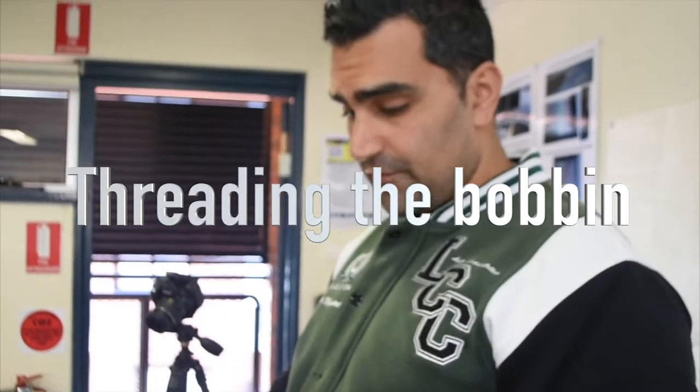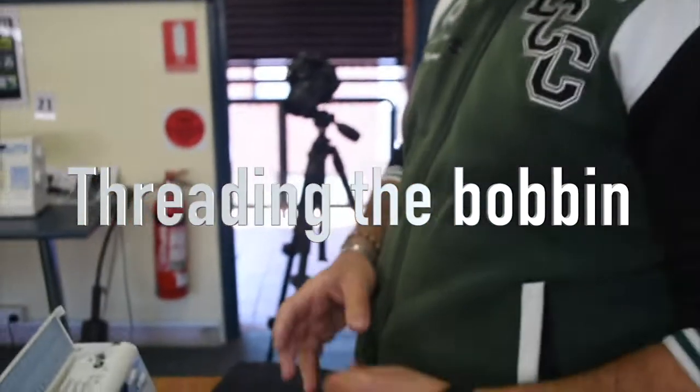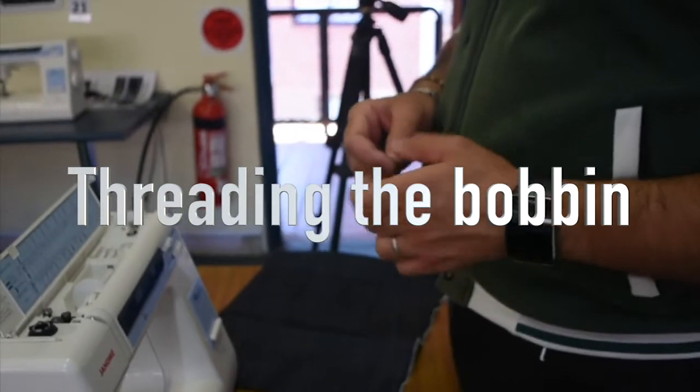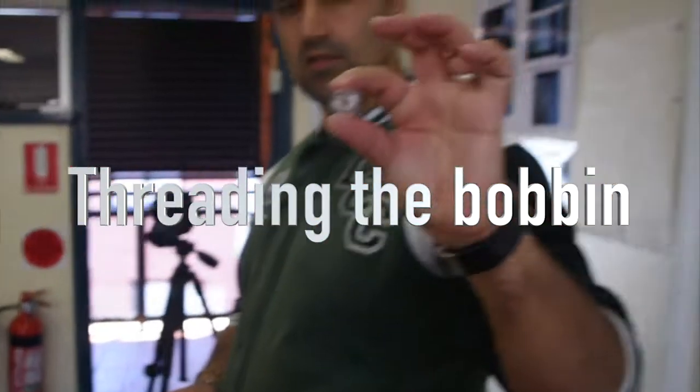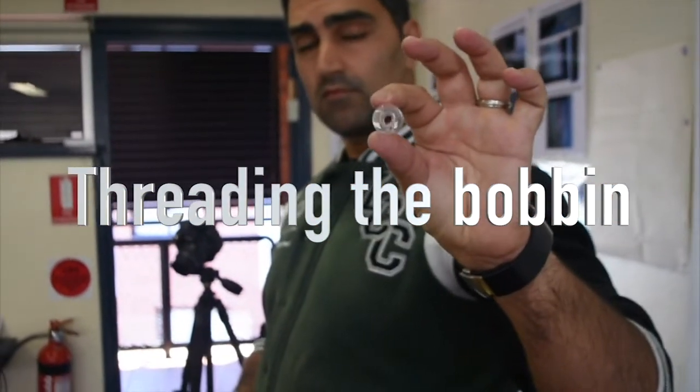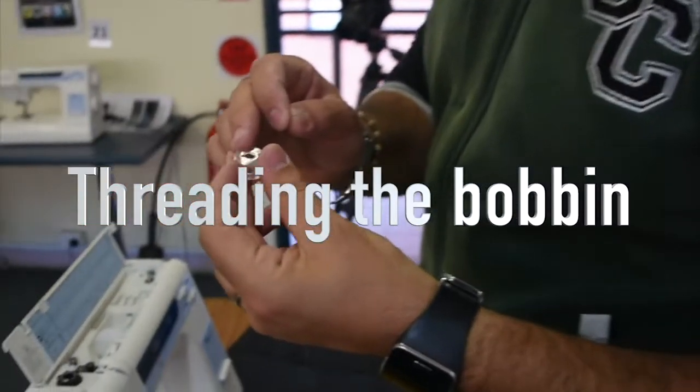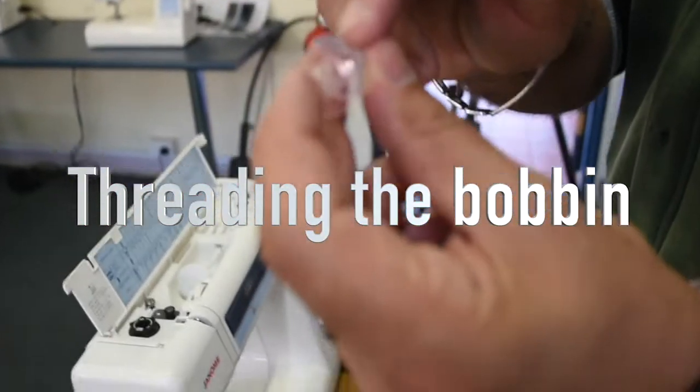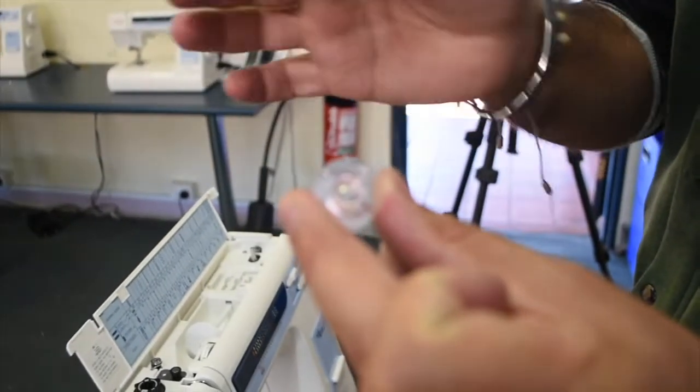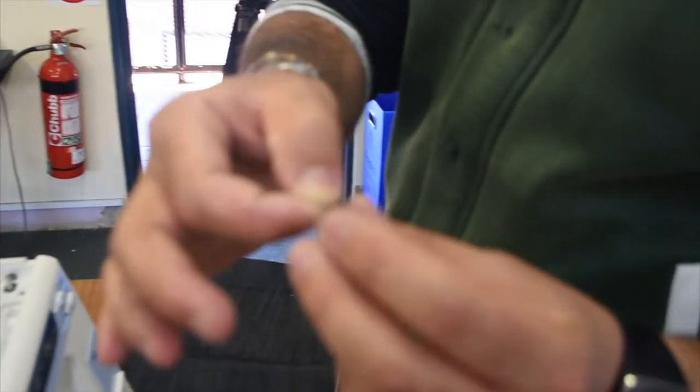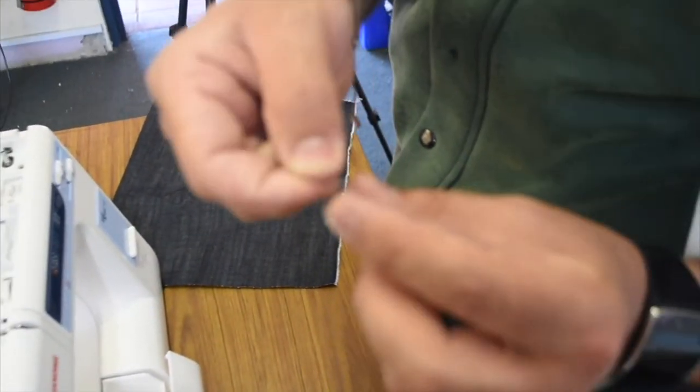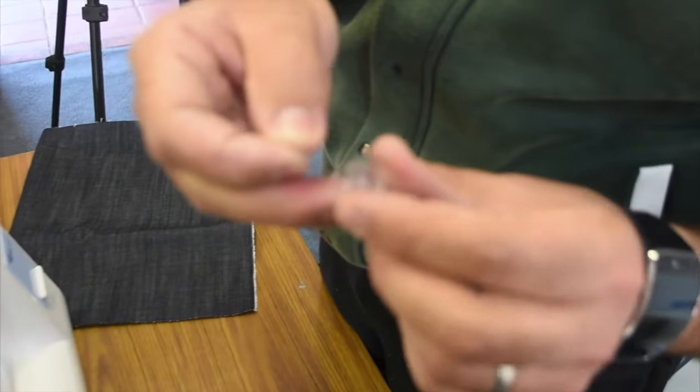Threading the machine: the very first step is our bobbin. The bobbin is this plastic piece, and if you notice, there's only one hole on either end. The way we thread it is we grab our thread and place it from the inside of the bobbin, where the cylinder is, and go through that hole.